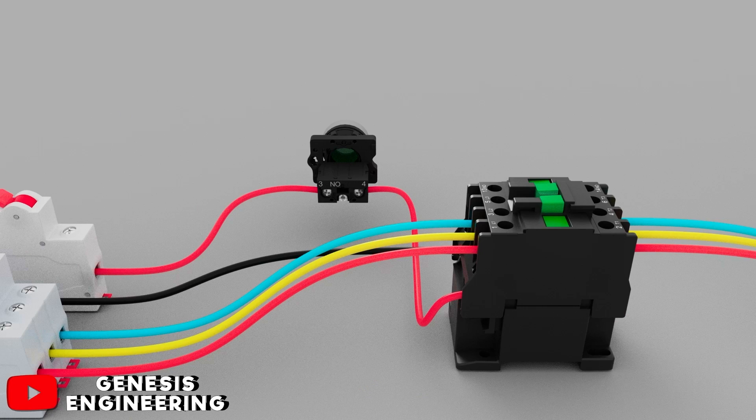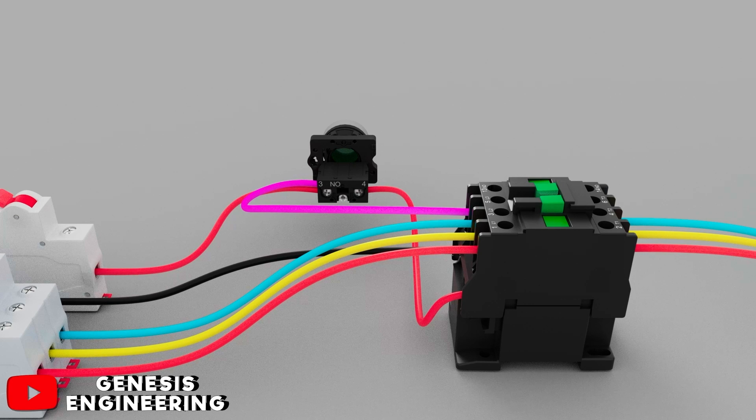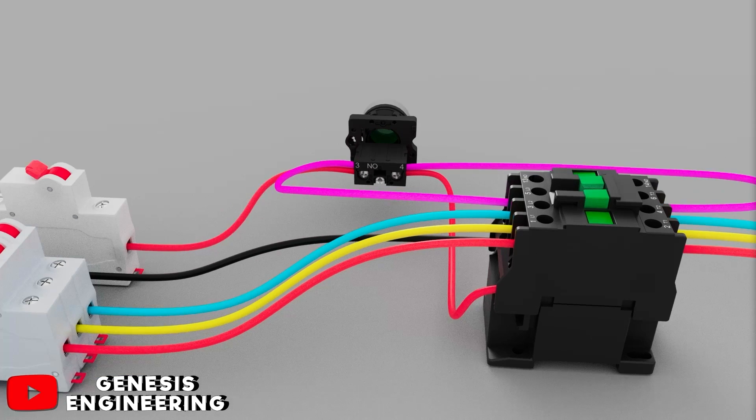Now to make the holding contact, let's keep the power circuit connection and change only the command circuit. Then we connect another conductor to terminal 3 of the button and connect it to auxiliary contact 13 of the contactor. On terminal 4 of the button we connect another conductor and connect it to auxiliary contact 14 of the contactor.